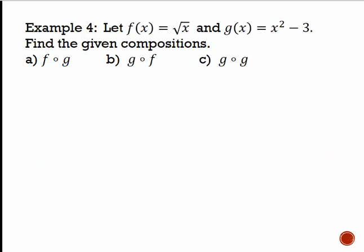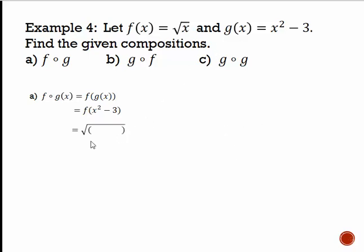Let's look at another example of the composition process. Here f(x) = √x and g(x) = x² − 3. For f∘g, we do f of g(x) — plugging g's formula into f. We do f of (x² − 3), take f's formula √x, remove the variable, and substitute in x² − 3, giving us √(x² − 3).